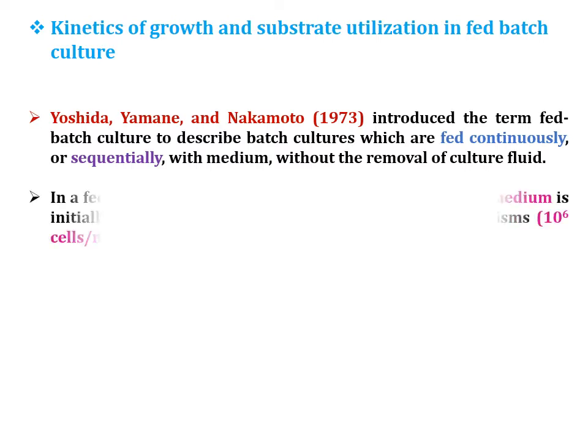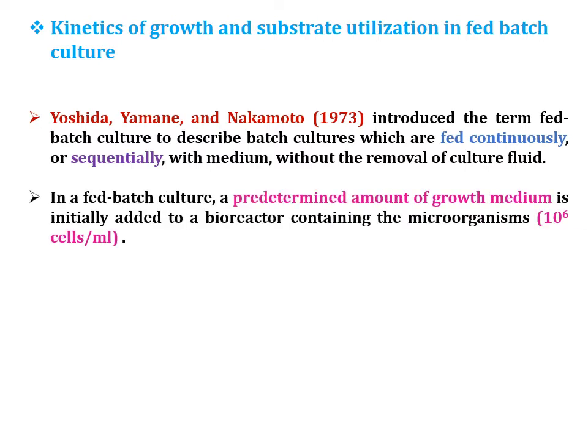In fed-batch culture, a predetermined amount of growth medium — for example, 250 ml — is initially added to a bioreactor containing the microorganism. The standard inoculum volume is 10^6 cells per ml.